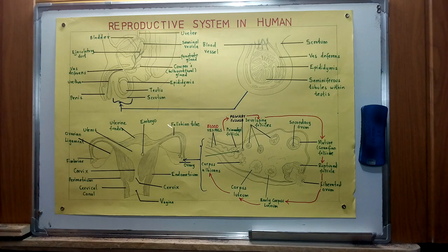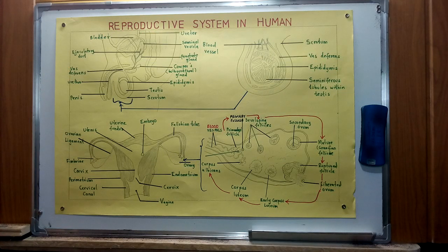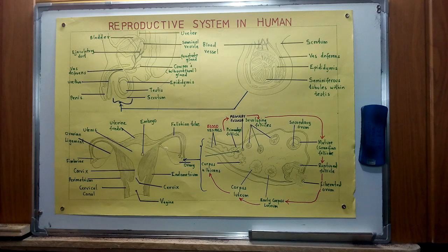The female reproductive system consists of various parts which, in collaboration with one another, play the role of facilitating the reproduction process. This female reproductive system is made up of various parts, but the key one assisting in the production of the female gametes is the ovary, which is an oval-shaped structure that lies outside of the pelvic cavity and is attached to the uterus by a membrane called the ovarian ligament.